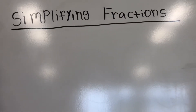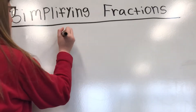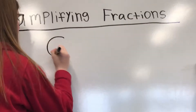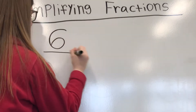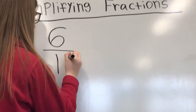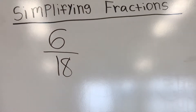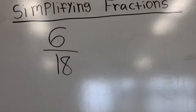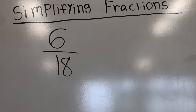This is how you simplify fractions. First, you take your fraction — in this case we're going to use 6/18 — and then you see what number is divisible by both numbers.